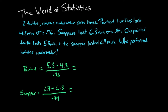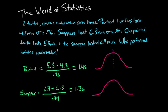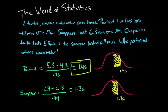For the painted turtle: (5.3 − 4.2) / 0.76 ≈ 1.45. For the snapper: (6.9 − 6.3) / 0.44 ≈ 1.36. Drawing this on a graph with the averages in the middle, our painted turtle was 1.45 standard deviations above average and our snapper was 1.36 standard deviations above average. The painted turtle's z-score is larger, so the painted turtle is the winner when comparing it to its species average.